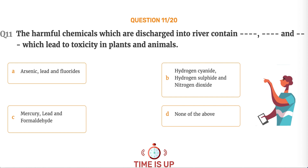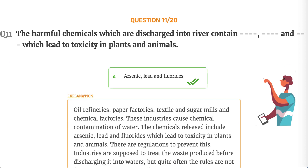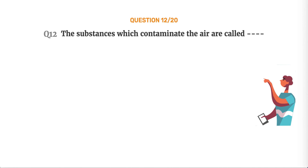The correct answer is Option A, Arsenic, lead and fluorides. Oil refineries, paper factories, textile and sugar mills and chemical factories cause chemical contamination of water. The chemicals released include arsenic, lead and fluorides, which lead to toxicity in plants and animals. There are regulations to prevent this — industries are supposed to treat the waste before discharging it into waters, but quite often the rules are not followed. The soil is also affected by impure water, causing changes in acidity and growth of worms.